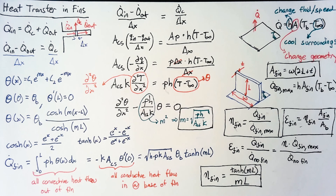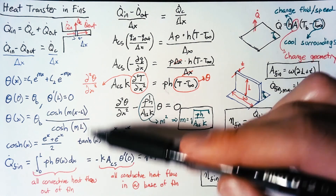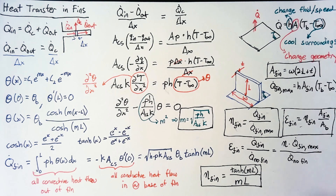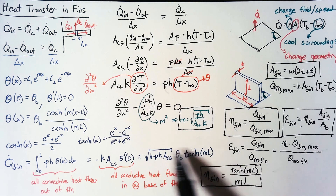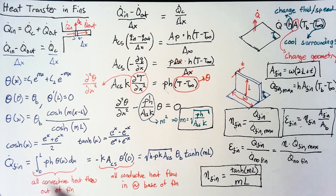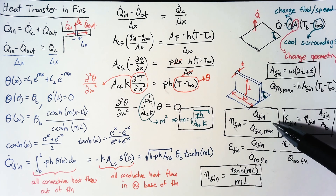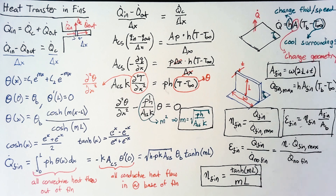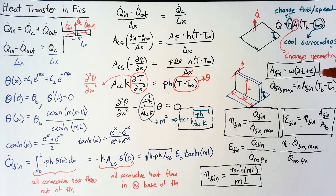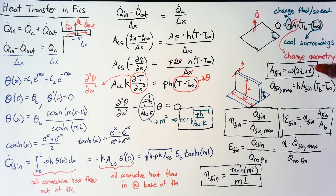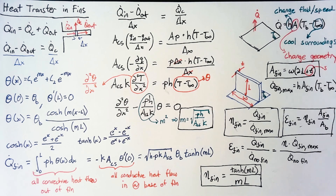Those are the basics. I'd like to challenge you to perform the integration and show you can get the formula for q-dot of the fin, or alternatively perform the differentiation and get the same result. Then plug that into the efficiency equation to derive the fin efficiency. One trick: you have to ignore the thickness t, assuming it is much smaller than the length, which is a requirement for the final derivation. Good luck, and I'll catch you next time.